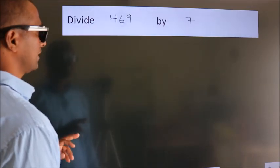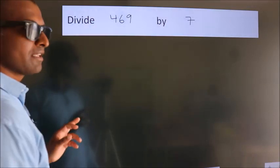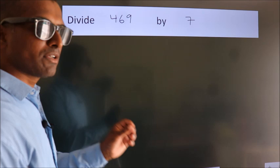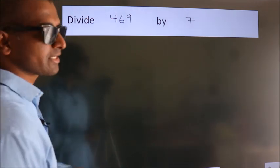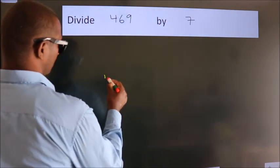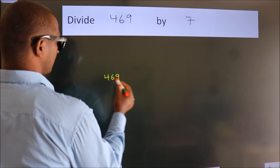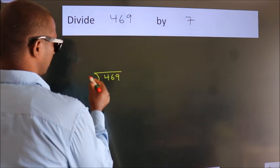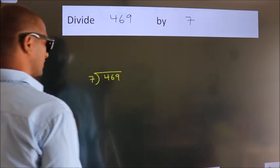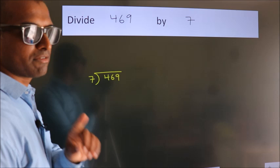Divide 469 by 7. To do this division, we should frame it in this way. 469 here, 7 here. This is your step 1.